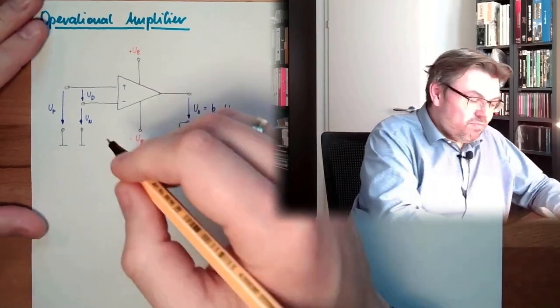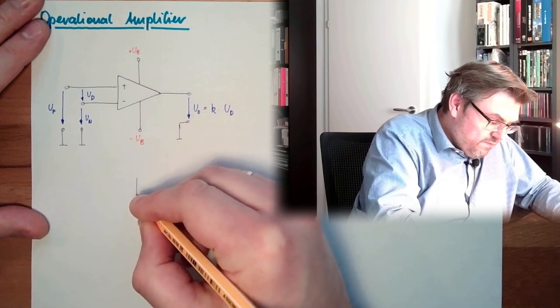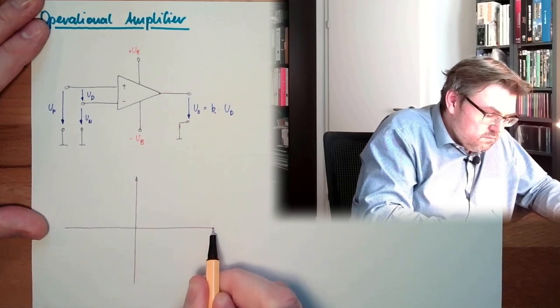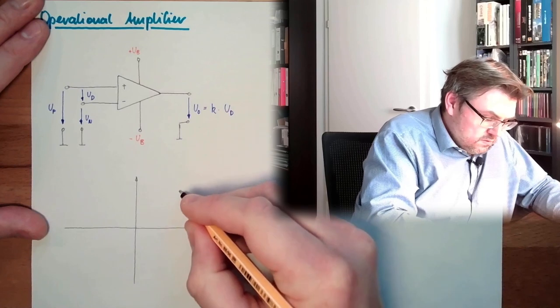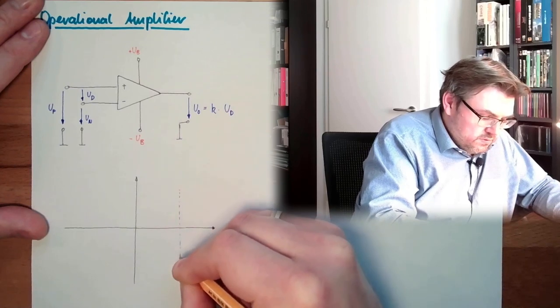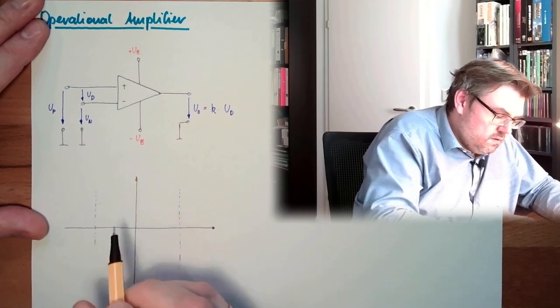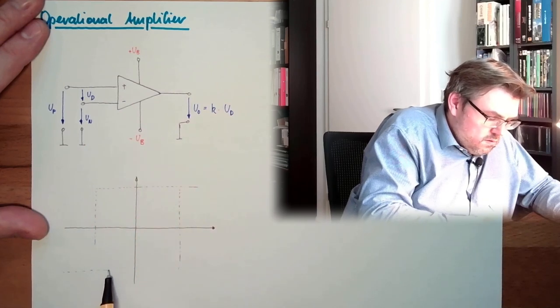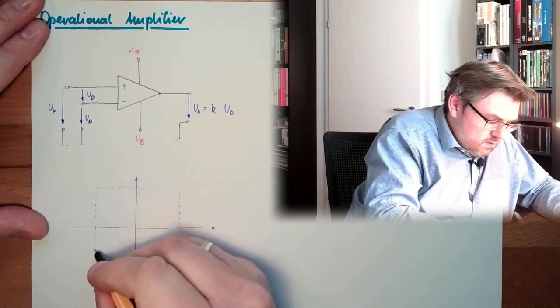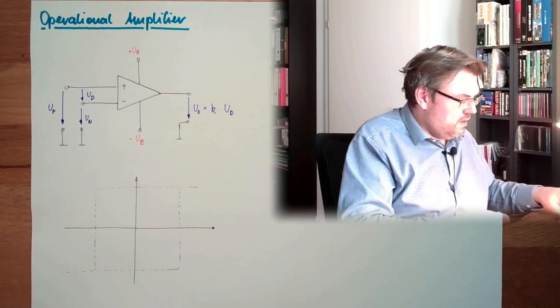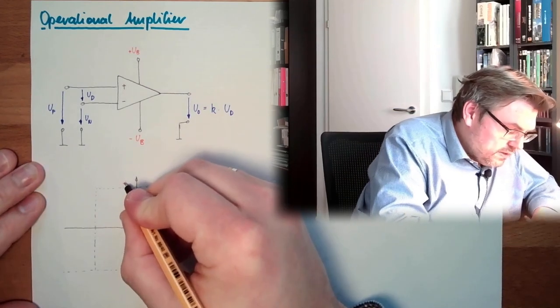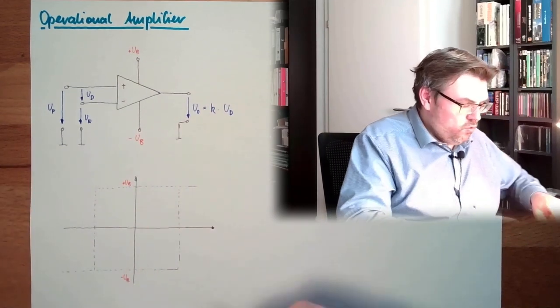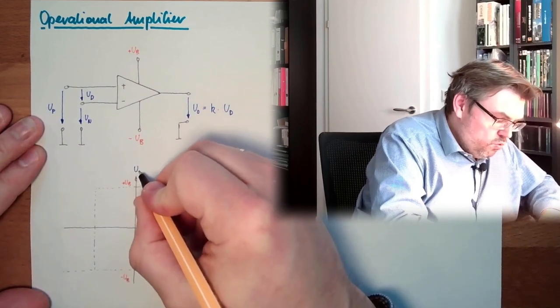So how does the output look like if I will draw a graph now? We have here, to a certain extent, we have here plus UB, we have here minus UB, and here we have UO.